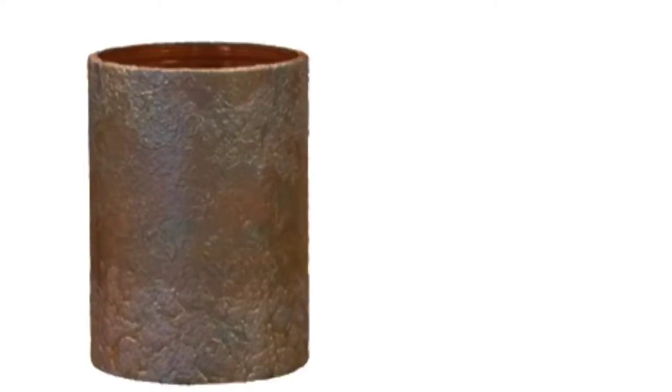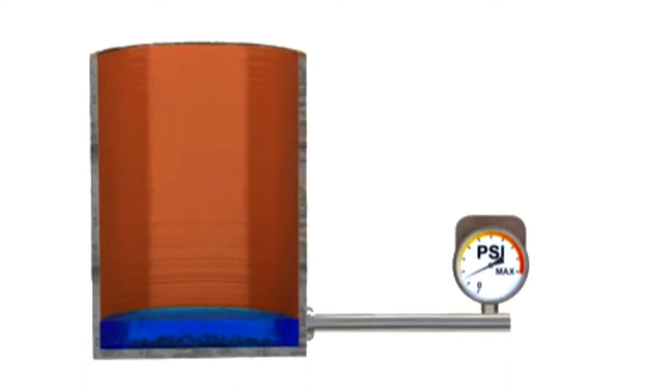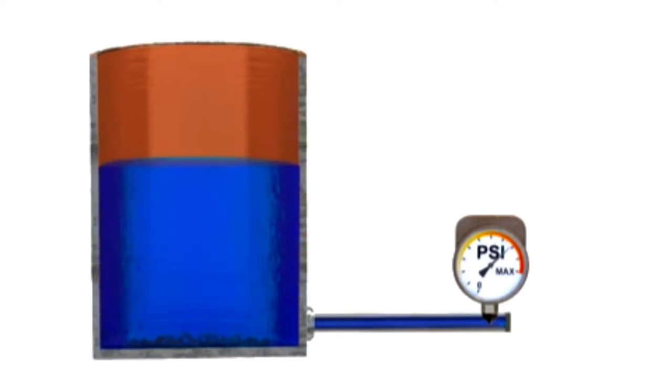The pressure exerted by a fluid material in a vessel is directly proportional to its height multiplied by its density. Hydrostatic pressure or head pressure is the force produced by a column of material. As the height of the material changes, there is proportional change in pressure.